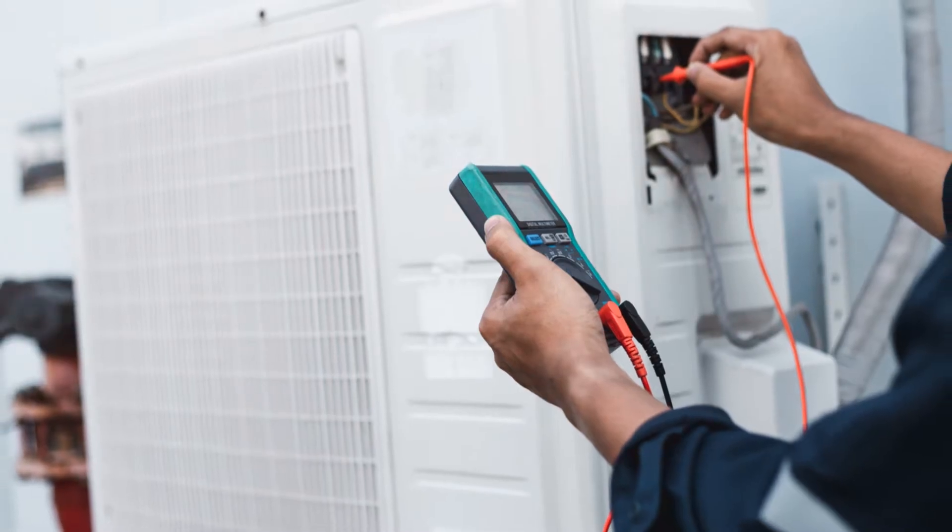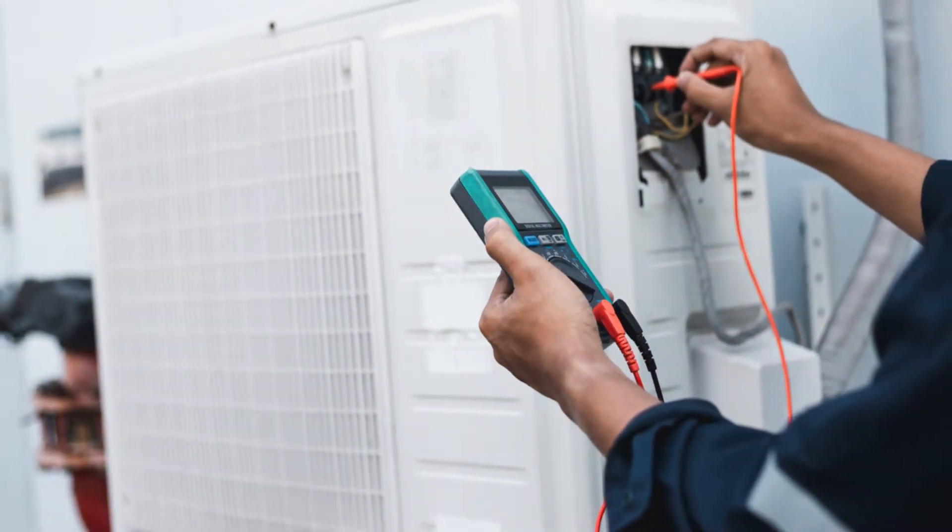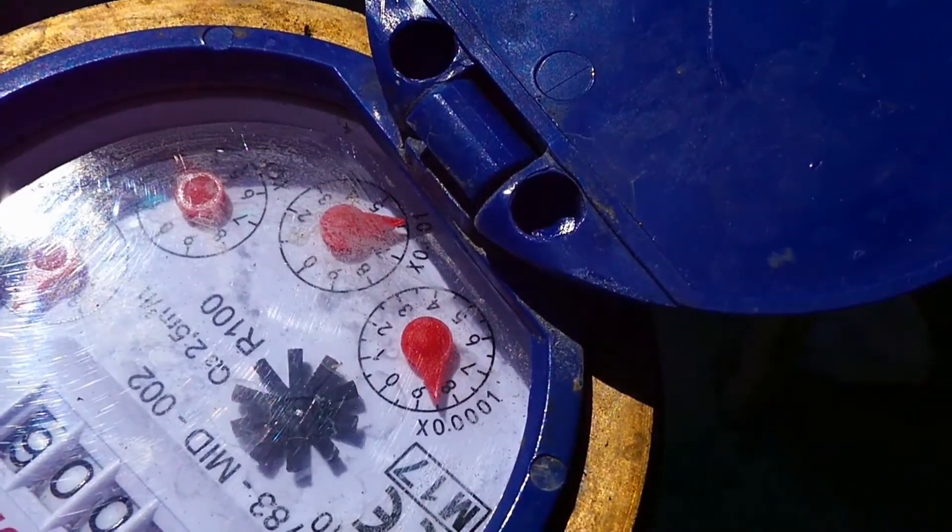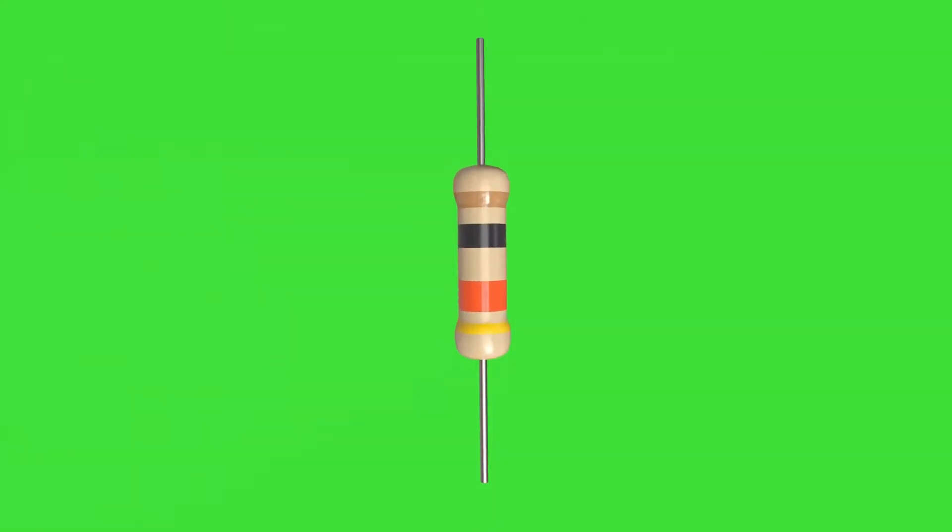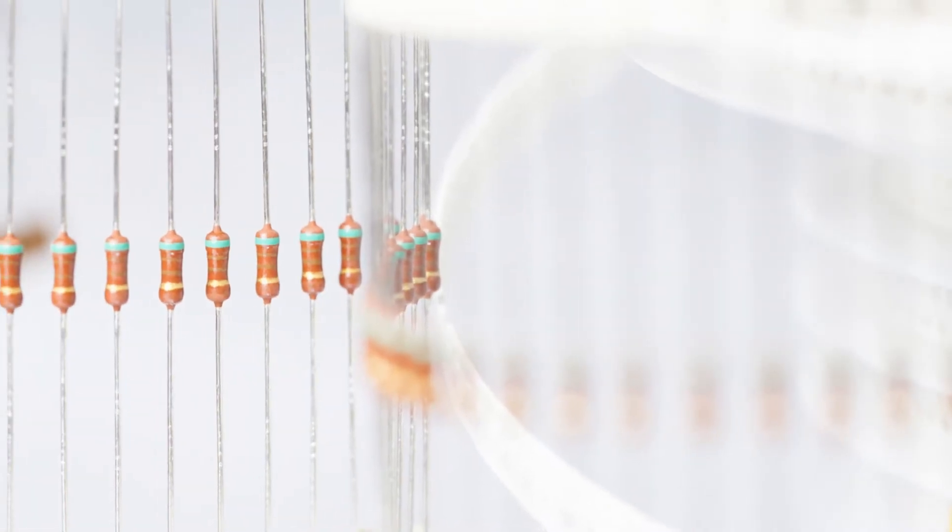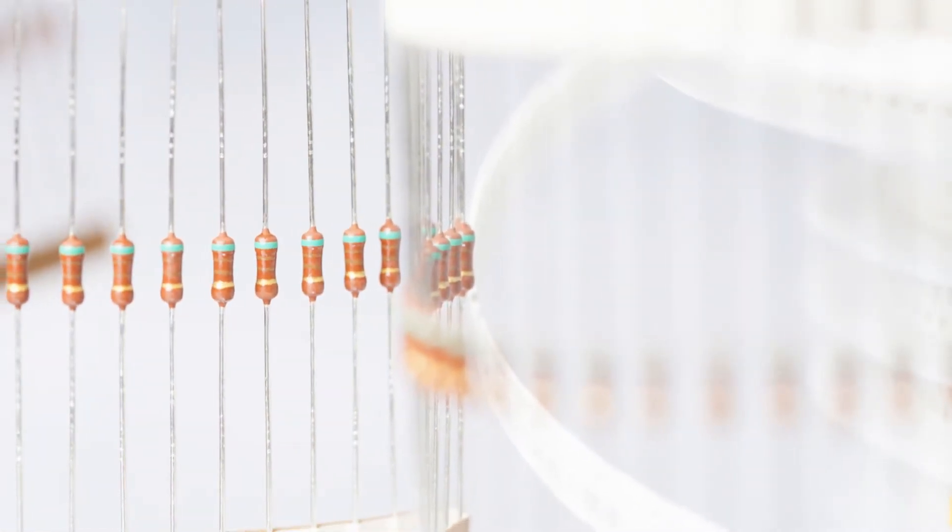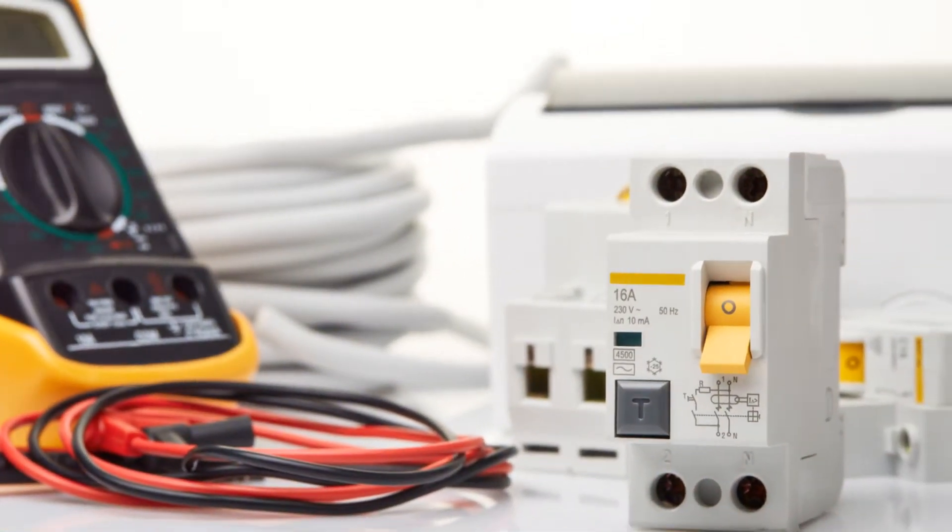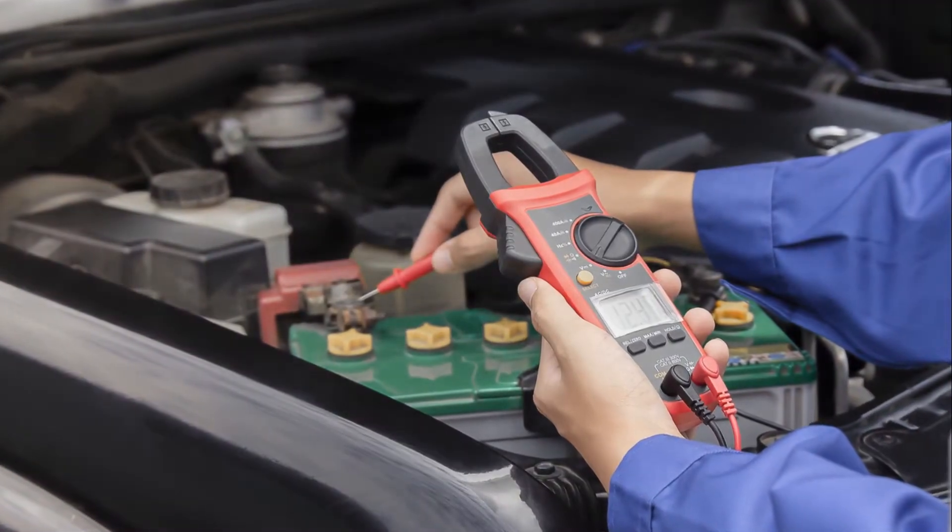Higher voltage means more pressure pushing the electrical current through the circuit. Current, on the other hand, is the actual flow of electric charge. It's like the amount of water flowing through the pipe. The more current, the more electrons are moving through the circuit. Resistance is the opposition to this flow. It's like a narrow section of the pipe that restricts water flow.